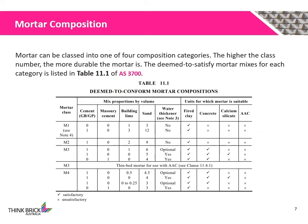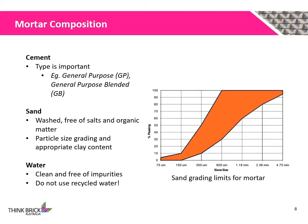Mortar can be classed into one of four composition categories. The higher the class number, the more durable the mortar is. The deemed-to-satisfy mortar mixes for each category are listed in Table 11.1 of AS3700. It is important that the quality of the main mortar ingredients are met. The type of cement shall be carefully chosen as they contain different ingredients. The sand shall be washed, free of salts and organic matter. The presence of salts may cause efflorescence, a white powdery deposit that appears after the masonry wall is constructed. The sand shall also be suitably graded and not contain too much clay. The figure on the right shows a set of grading limits for the sand, however it shall be used as a guide only.